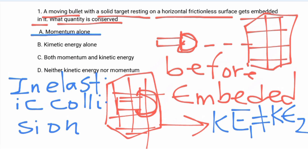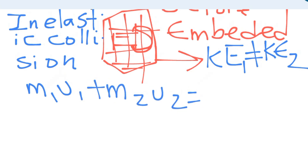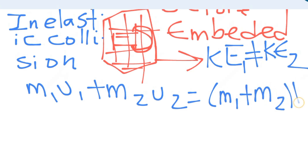Don't forget: in an elastic collision, both kinetic energy and momentum are conserved. In an inelastic collision, only momentum is conserved. So the answer is A. We know the formula of momentum conservation: m1·u1 + m2·u2 = (m1 + m2)·v, giving the common velocity v.